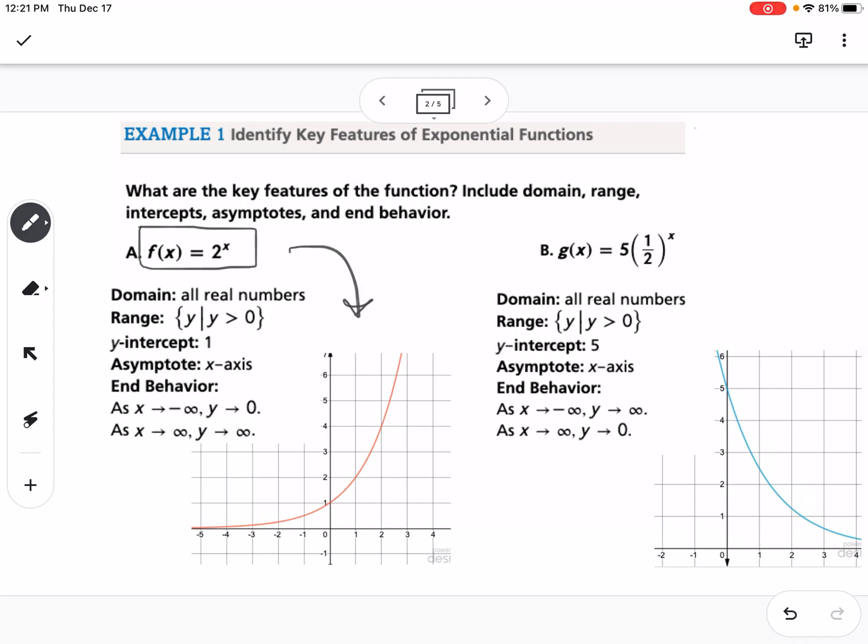What we have to know is, when we're writing an exponential, it's in the form a times b to the x, and a is going to be our initial value, or our y-intercept, and b is our growth or decay rate.